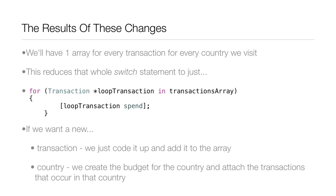If you're not totally following yet, that's fine — it will make a lot more sense once you see it in Xcode. This lesson is just a general outline of what we're going to be implementing. The result of these changes is one array for every transaction for every country we visit, reducing that whole switch statement to just one for-in loop with a single statement inside it that sends every transaction the spend method.